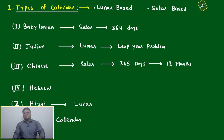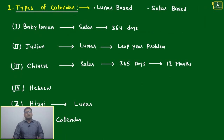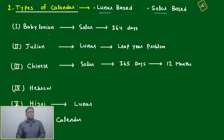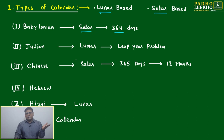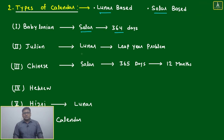Welcome. We'll take a little more idea about the types of calendar — whether it is lunar based or solar based. The Babylonian calendar was solar based, 364 days. What complexity they were facing, I don't know, and I'm not interested.